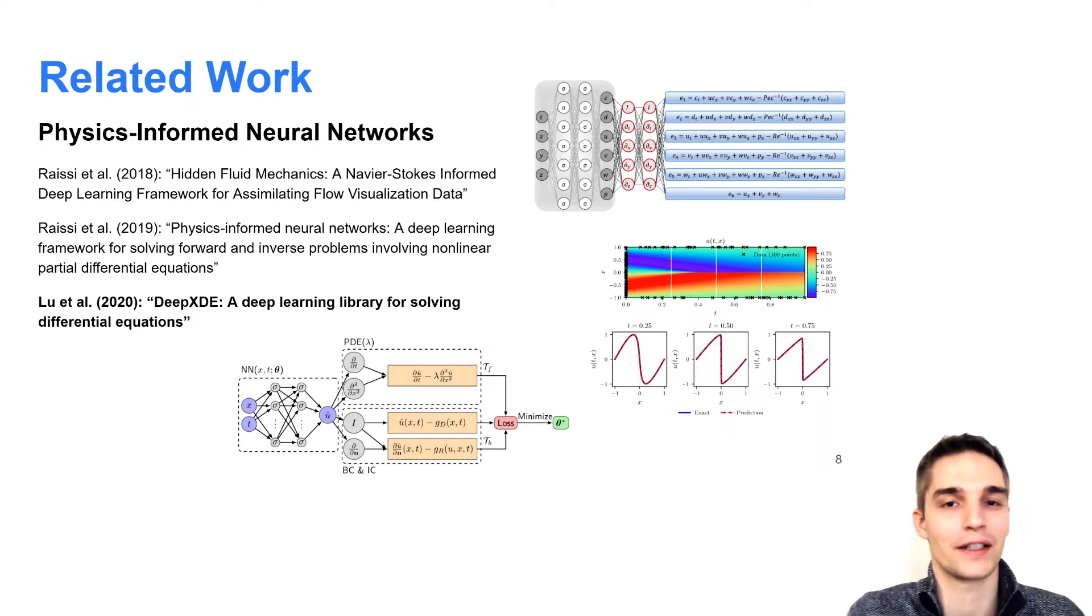These physics-informed approaches yield smooth continuous results that can be evaluated everywhere on a domain and are particularly suited for example to interpolate in between sparse data samples or to obtain for example a pressure field just by investigating a velocity field. However, once the implicit neural network is trained, it cannot generalize to new domains outside the training data.